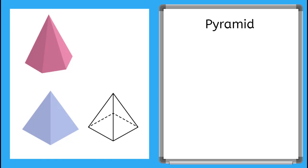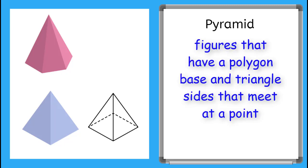Next, we have pyramids. Pyramids have a polygon base and triangle sides that meet at a point. Here we have a hexagonal pyramid. So the base is a six-sided polygon.